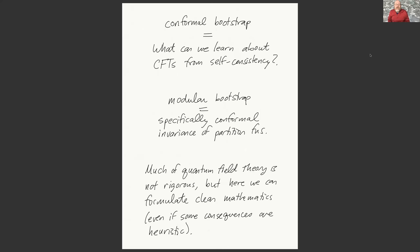In particular, what we'll be dealing with today is a program physicists call the conformal bootstrap. The idea is: how can you figure out what the space of possible conformal field theories looks like, and what do various self-consistency relationships tell you? We'll be dealing with the modular bootstrap, which asks what we can learn from conformal invariance of partition functions, and it will turn out this is deeply connected with linear programming bounds.